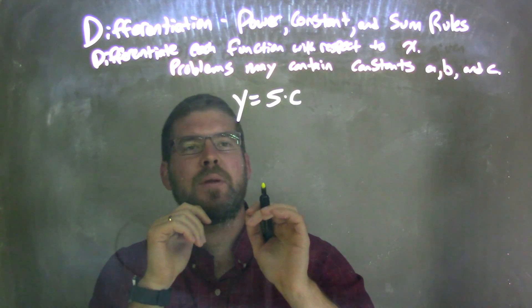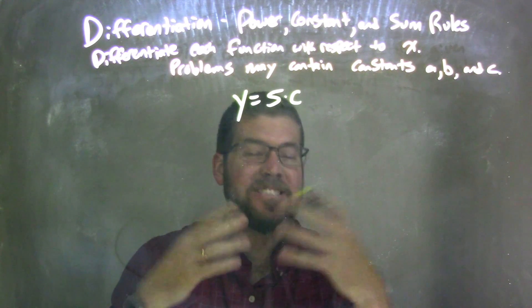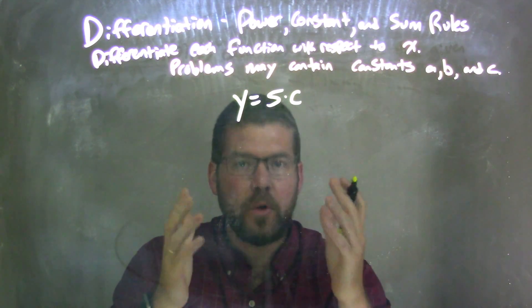What that allows me to know is that 5 times c, 5 times some number, is just some other number. It's still going to be a constant.